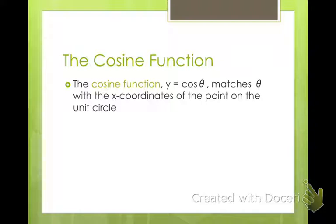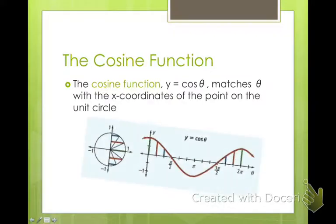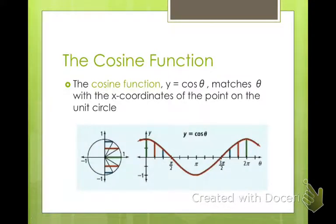The cosine function, y equals cosine of theta, matches theta with the x-coordinates of the point on the unit circle. So here with cosine theta, all we've done is we've taken the unit circle, and we start at that point. So it was 0, 1 here, and we've kind of just extended that unit circle. Instead of going backwards, we kind of took this whole piece and flipped it down and around and back up again.